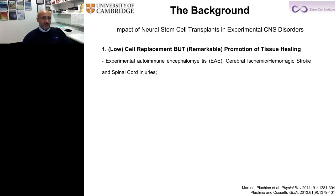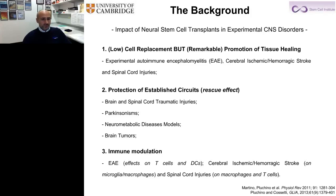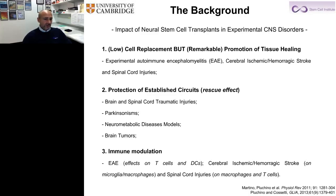This data comes from experiments on EAE as a model of MS, on mice with experimental ischemic or hemorrhagic brain stroke, and in mice with spinal cord injuries. We also know that stem cell transplants work for what is called rescue effects — they are able to protect what's left after the damage. They also work because transplanted stem cells are able to modulate a number of immune responses of the host, which are intrinsically flexible in nature and very much dependent on the disease model and the pathophysiology that we as investigators are attempting to cure via stem cell transplantation.